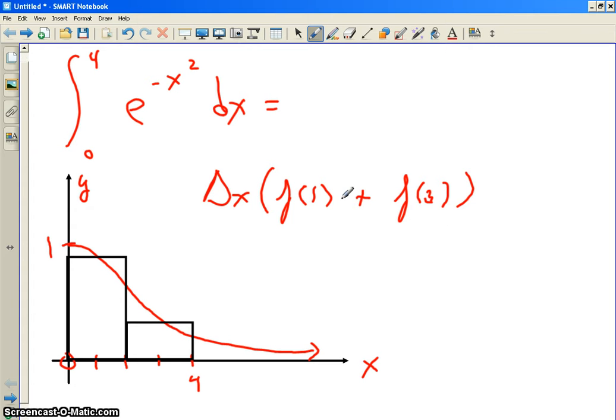Now you tell me, you know what delta x is. What is it? It's 2. And f of 1, what is f of 1? E to the negative 1 squared. That's e to the negative 1. And what's f of 3?